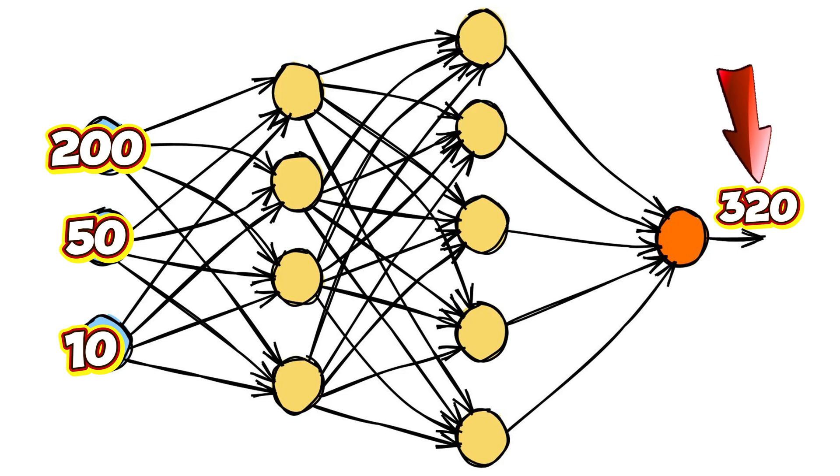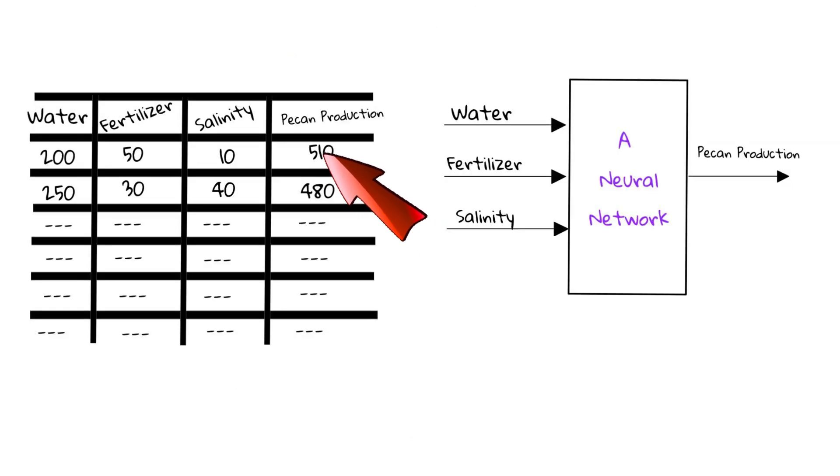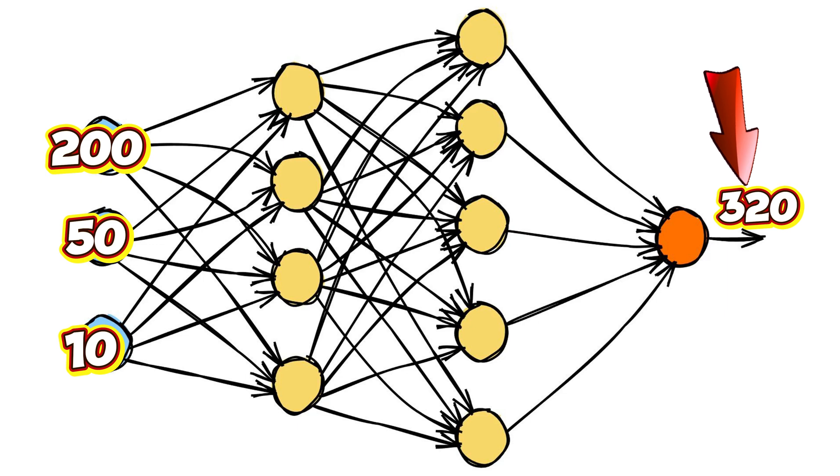Now, this calculated output is not close to what the data is saying. Remember, in the beginning, all the W's and biases are random. So, the output will not be correct.